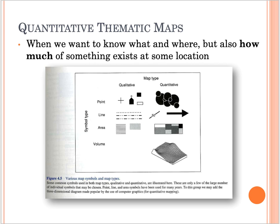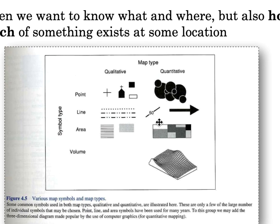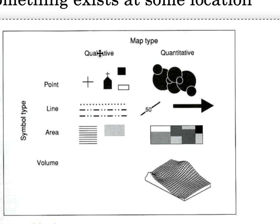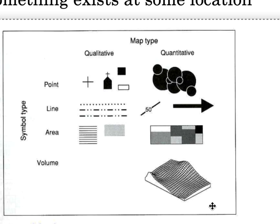Next we will be talking about quantitative thematic maps — when we want to know what and where, but also how much of something exists at a location. Looking at qualitative versus quantitative columns: qualitative covers point, line, and area features, whereas for quantitative we see the volume — small and large circles for point features, an arrow for line features, different sized polygons for area, and volume.